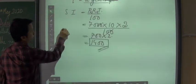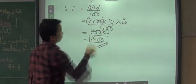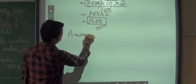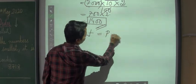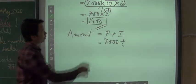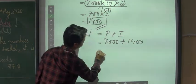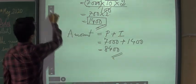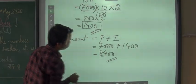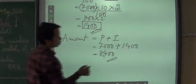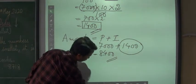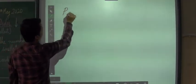So the simple interest is 1400 rupees — this is the cost of borrowing on the principal of 7000. To find the amount, the formula is Amount = Principal + Interest: 7000 + 1400 = 8400 rupees. At the end of 2 years, the person who borrowed 7000 rupees needs to pay back 8400 rupees, and the cost of borrowing (interest) is 1400 rupees.